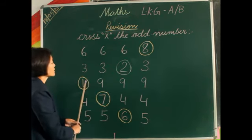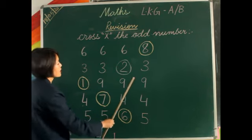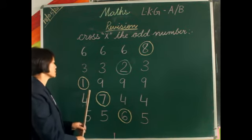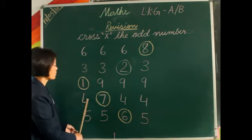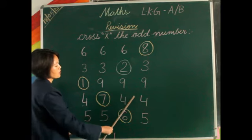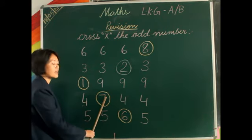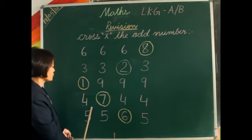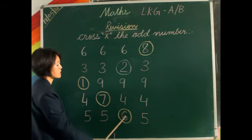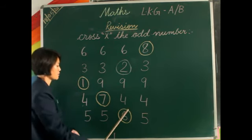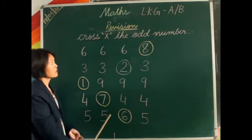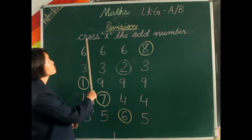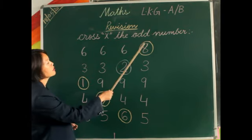Now here: 1, 9, 9, and 9 — from here, 1 is the odd number. And 4, 7, 4, and 4 — from here, 7 is the odd number. And 5, 5, 6, and 5 — so 6 is the odd number. So just now we learned how to cross the odd number.